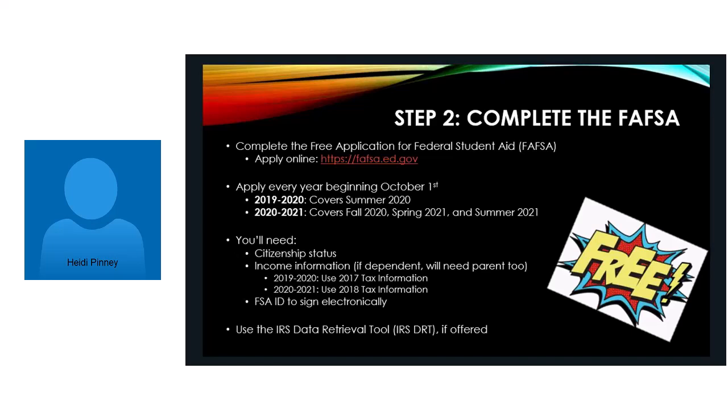We do understand that situations happen — your 2018 income might be completely different than your 2019-2020 income. That's okay. After you file the FAFSA form, go ahead and contact Daytona State's financial aid office and let us know, and we'll walk you through what to do next. You'll use the FSA ID that you've already done in step one to sign electronically in step two.